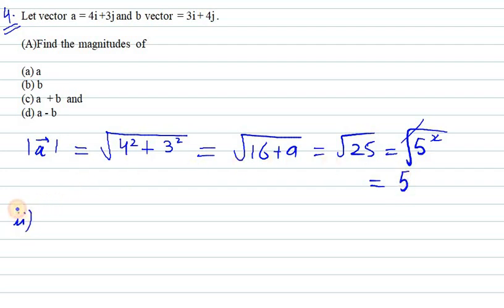Now we have the second one as we need to find the b magnitude. So b magnitude can be written as under root 3 square plus 4 square. So again we get the same value that is 25 under root and we get the value as 5 units.